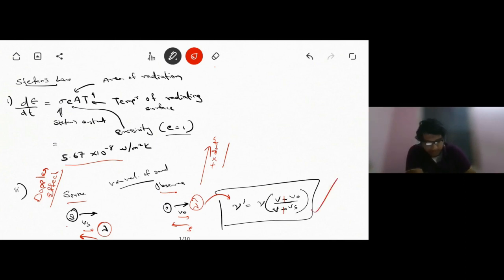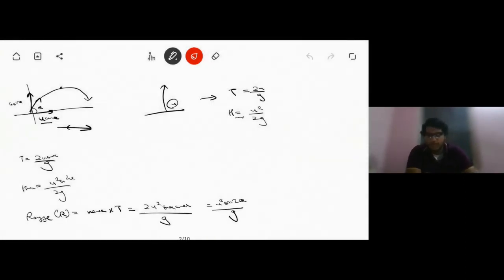Next, projectile motion. Suppose the body is moving in the upward direction like a vertical projectile. In that case, the total time of flight is given by t equals 2u by g, and the maximum height achieved is u square by 2g.